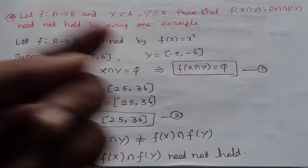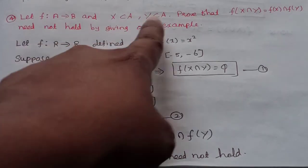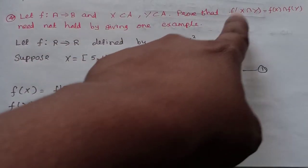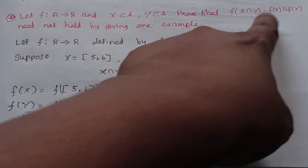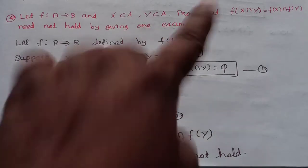How do we answer the question? Let f: A→B and X⊆A, Y⊆A. Prove that f(X∩Y) = f(X)∩f(Y) need not hold by giving an example.